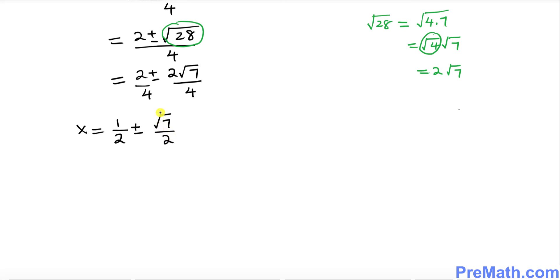And that is our solution. Thus our solution set turns out to be {1/2 + √7/2, 1/2 - √7/2} by splitting these two positive and negative signs. Thanks for watching and please subscribe to my channel for more exciting videos.